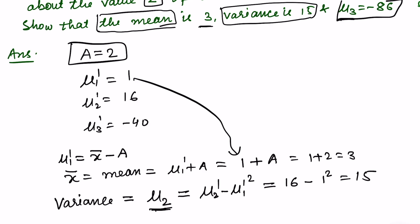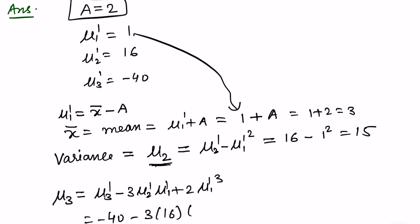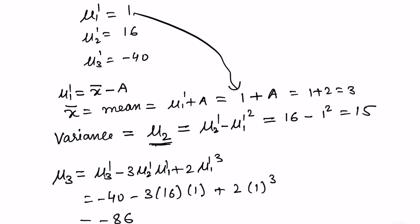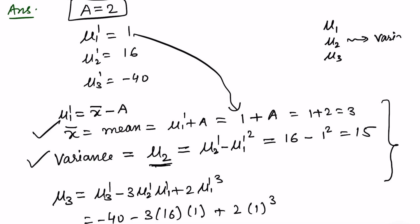For the third part, finding mu 3: using the relation mu 3 dash minus 3 times mu 2 dash times mu 1 dash plus 2 times mu 1 dash cubed, we substitute minus 40 minus 3 times 16 times 1 plus 2 times 1 cubed, and the answer comes out to be minus 86. Note that in this question, instead of saying find mu 2, they used the word 'variance' because the second moment about the mean is variance.